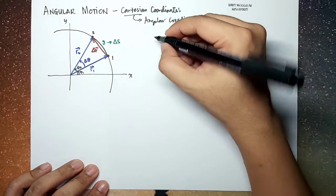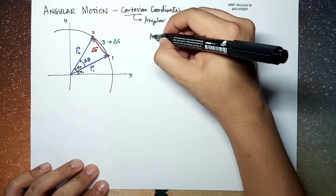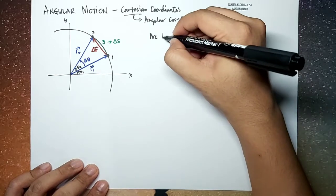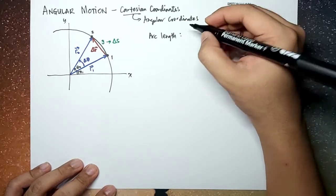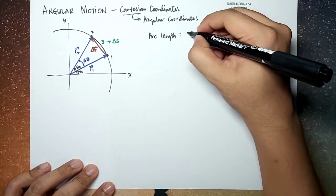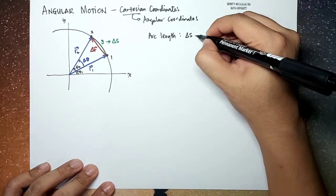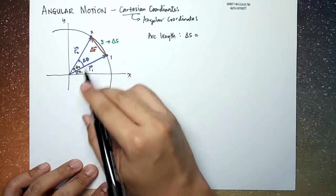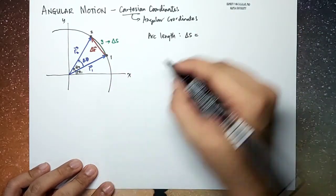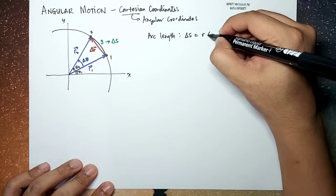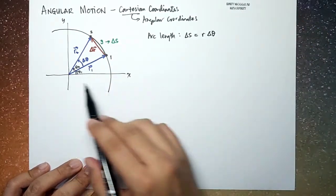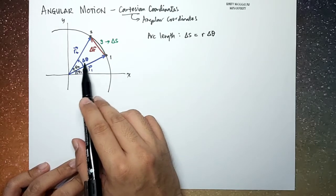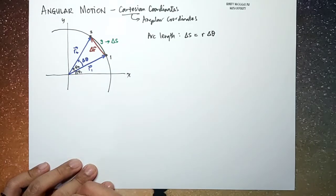We define the arc length delta s, and we know that delta s is equal to r times delta theta, where theta 1, theta 2, and delta theta are measured in radians.